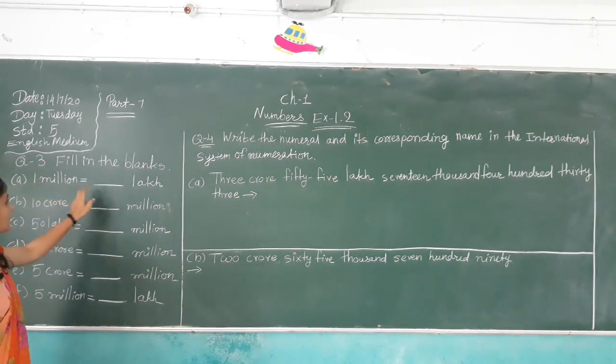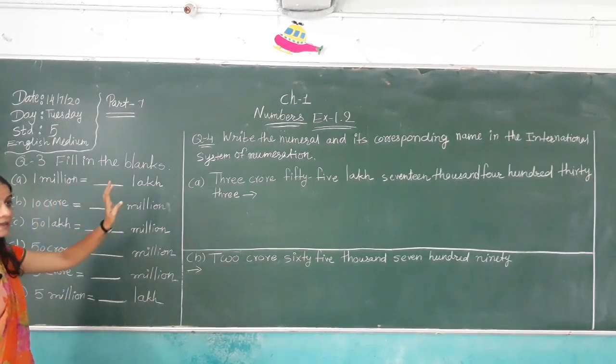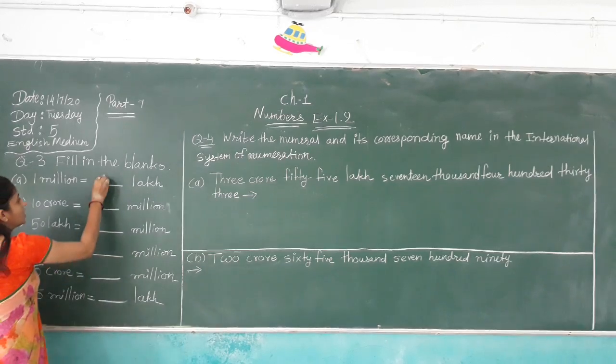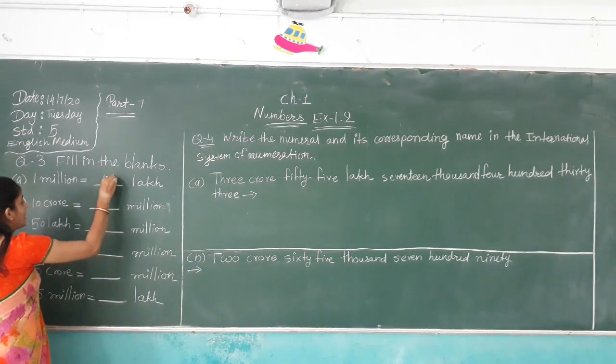1 million is equal to blank lakh. 1 million is equal to 10 lakh.